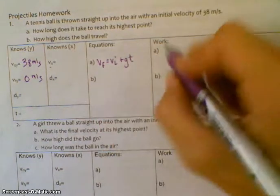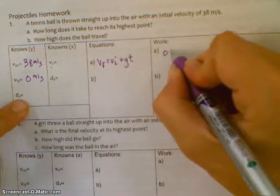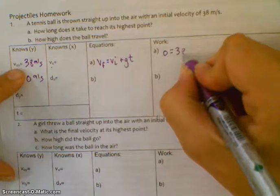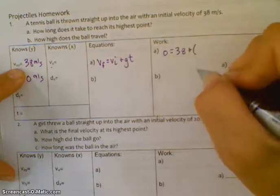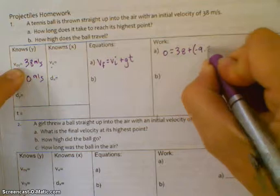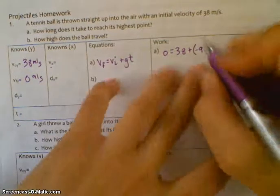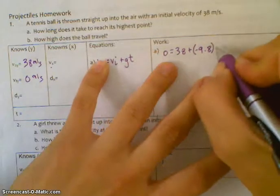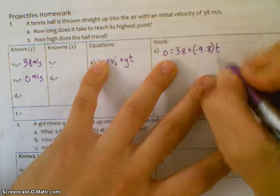So we said zero equals 38 plus, what is G always on Earth? Negative 9.8, times t.